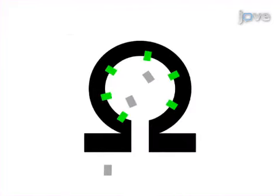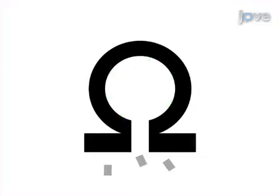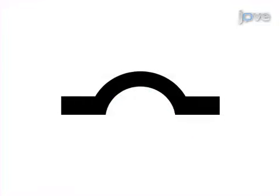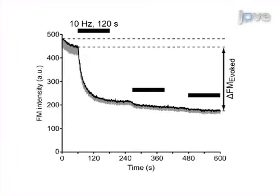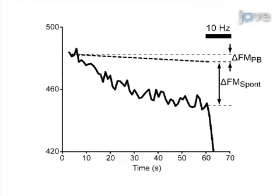Next, allow the synaptic vesicles to undergo exocytosis and lose the FM dye from the vesicular membrane and lumen into the extracellular space. Results are obtained that show FM dyes can be used for monitoring the synaptic vesicle de-staining.